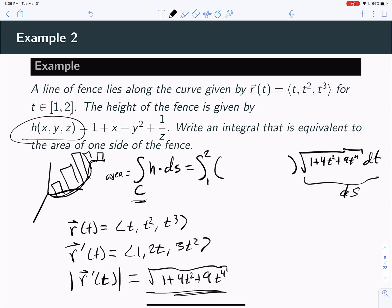I'm adding up the lengths, and then I've got to multiply by the heights of the fence. Well, x is t, y is t², and z is t³.